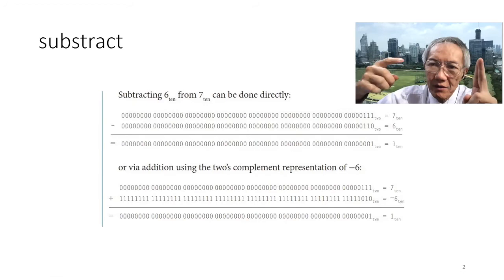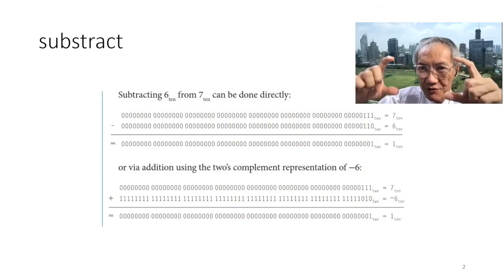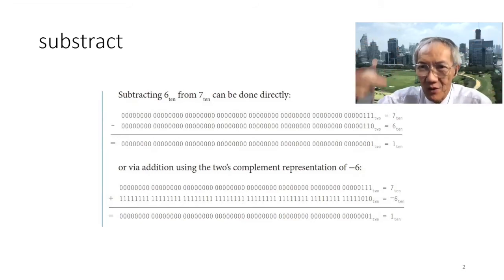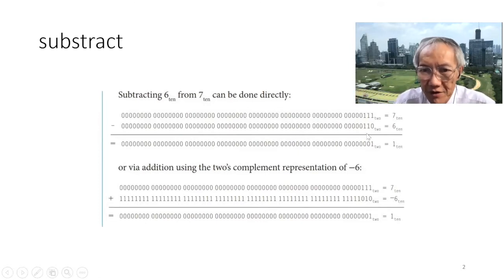Then you add one, because this is two's complement. You inverse and then add one to avoid minus zero. So one one zero becomes zero zero one, plus one becomes zero one zero. So minus six is zero one zero in two's complement.